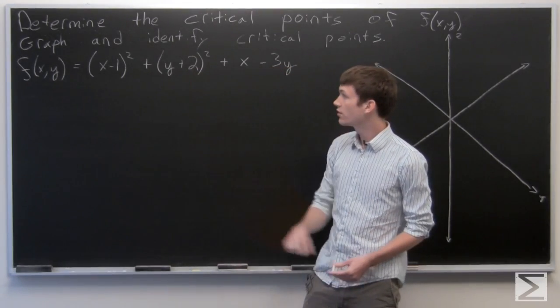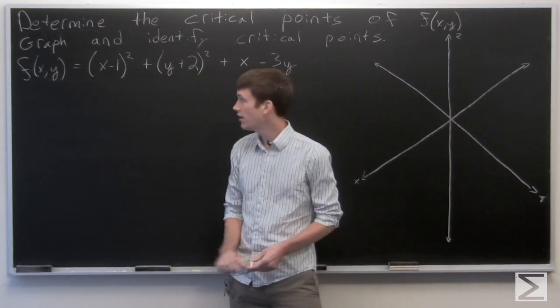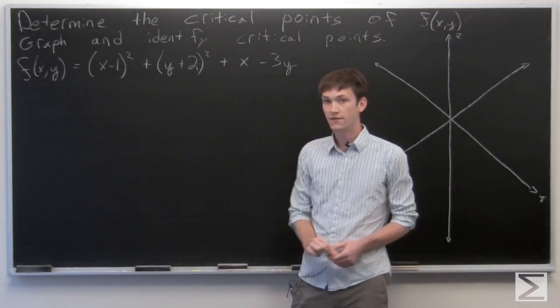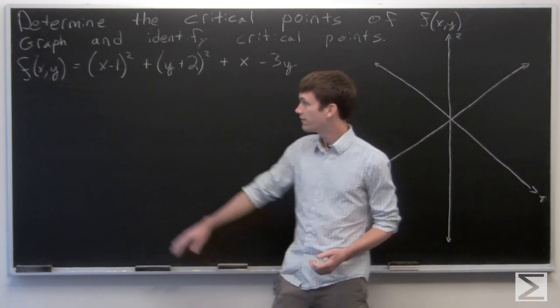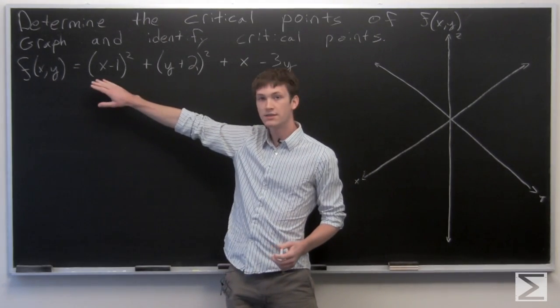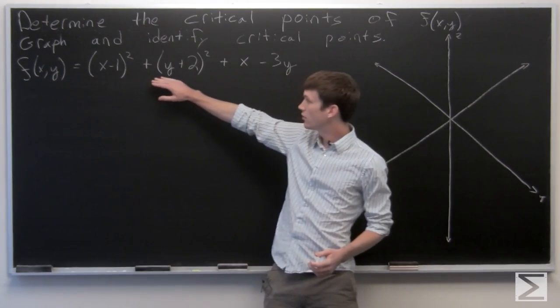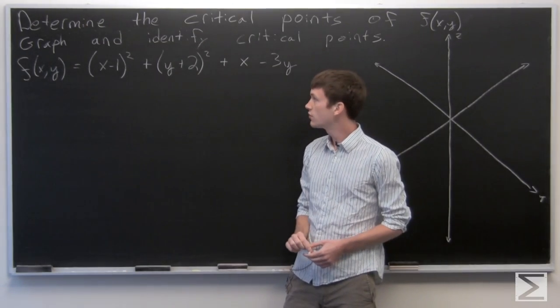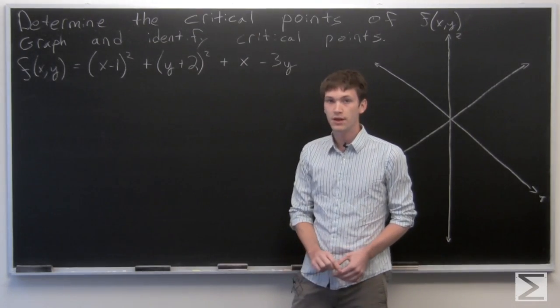In this problem, we're asked to determine the critical points of f(x,y) and graph and identify the critical points on the graph. So our function f(x,y) is given as the quantity (x-1) squared plus the quantity (y+2) squared plus x minus 3y.